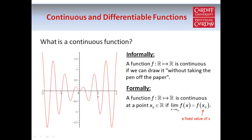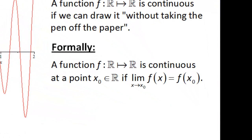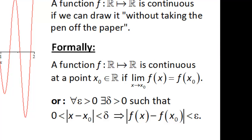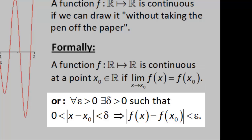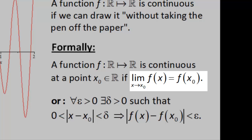We'll look at plenty of examples of continuous functions, so hopefully this definition will become clearer as we go on. This definition uses the concept of a limit, which we discussed in a previous tutorial. So we can write this definition in another way using the formal definition of a limit — using epsilon and delta language. These two definitions are exactly the same; in the second one we use the proper definition of a limit, whereas in the first we just write the word "lim" assuming we know what is meant by a limit.